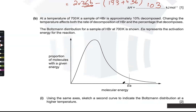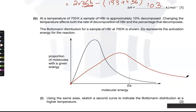At 700 K a sample of HBr is approximately 10% decomposed. Temperature affects both the rate and the percentage — both yield and rate. To sketch the Boltzmann curve at a higher temperature: it starts at (0,0), touches the original curve at only one point, the peak is lower, and it ends higher on the right.